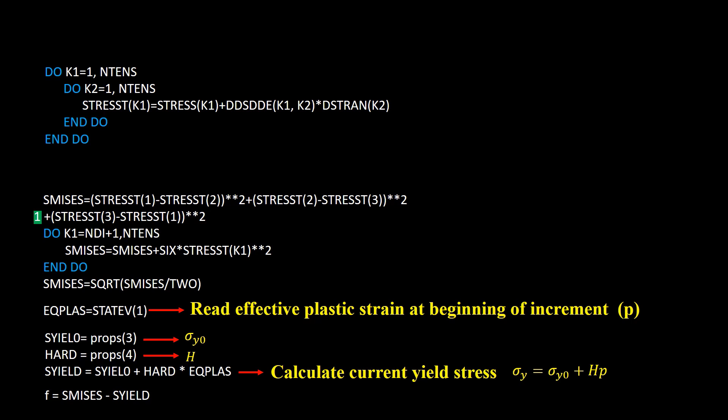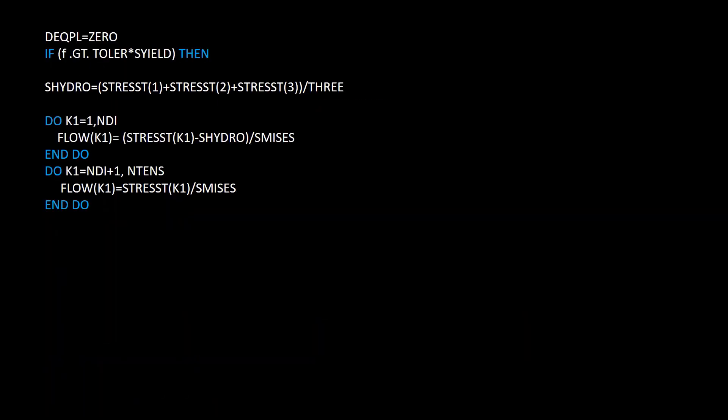This line calculates the current yield stress. Using the effective trial stress and current yield stress, we calculate the yield function. In the case of elastic deformation where f is negative, delta p is zero; otherwise, we calculate delta p by iterative solution.